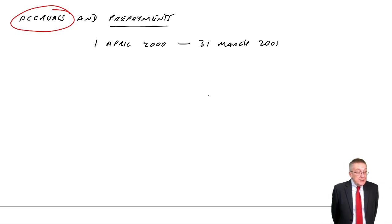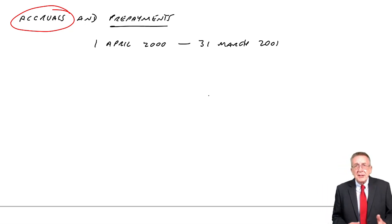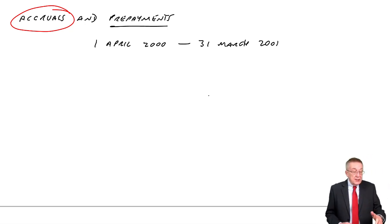And he made the following payments in July 2000. He paid 500 for the 3 months to 30th of June. So as you'd expect with telephone, you don't know how much you owe until after the period's finished. And so the 3 months to June, remember he started in April. So April, May, June. The cost was 500.